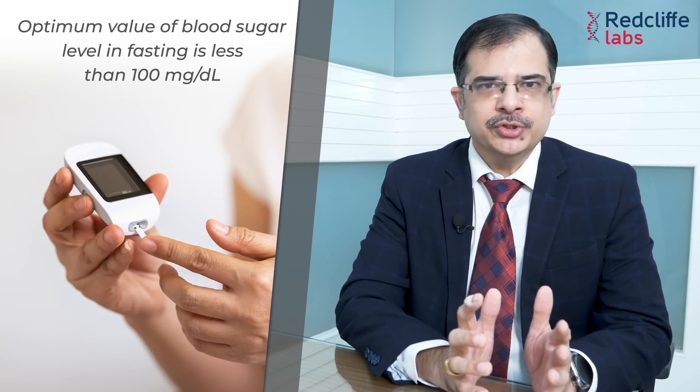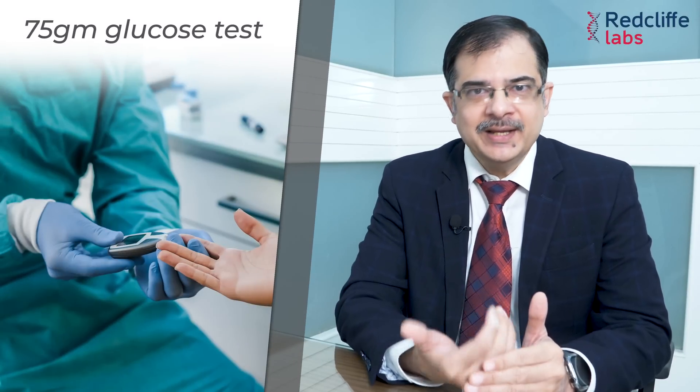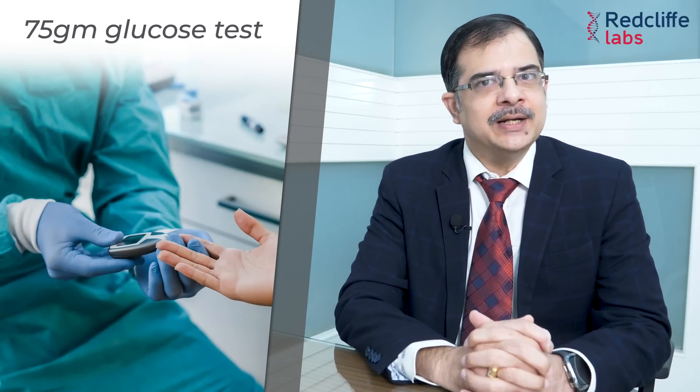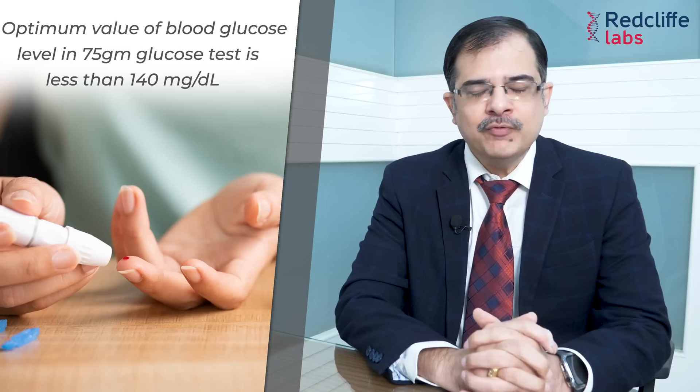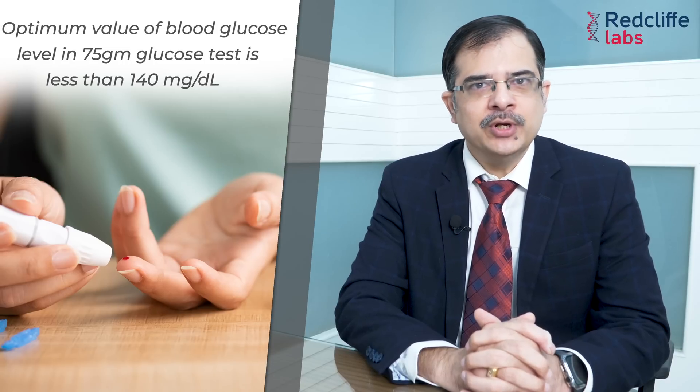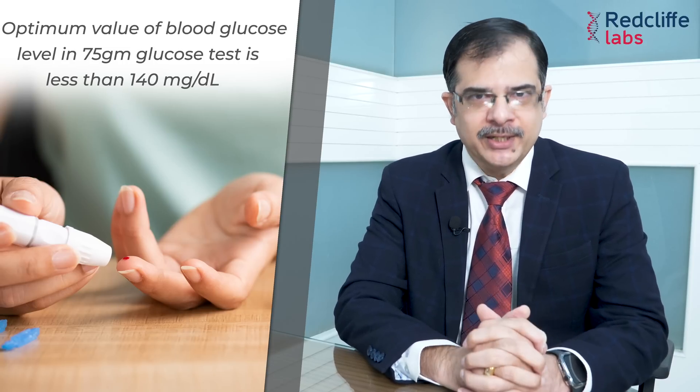100 se 125 tak yeh borderline maana jata hai, aur 126 se upar hote hain toh yeh diabetes ki range mein aa jata hai. Doosra test hota hai 75 gram glucose dene ke baad, 2 ghante ke baad test kiya jata hai. Normal value hoti hai 140 se kam. Aur agar 140 se 199 hai, toh use bolenge borderline sugar ya pre-diabetes. 200 se upar hote hain toh woh diabetes ki range mein aa jata hai.